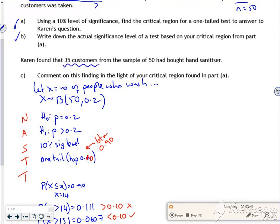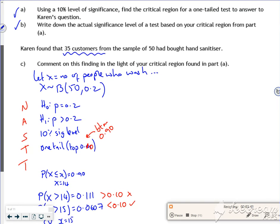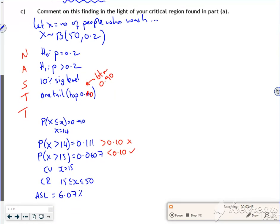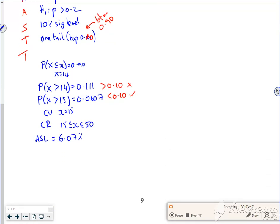Part C says we found 35 customers bought it, comment on the findings. So my X equals 35 is in the range.